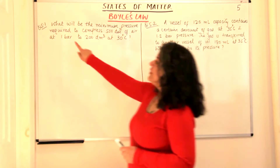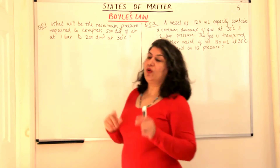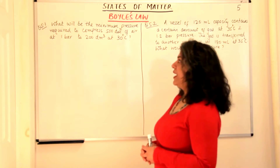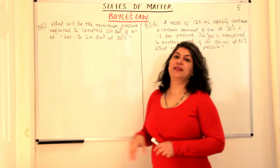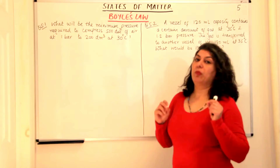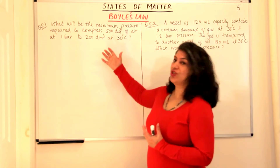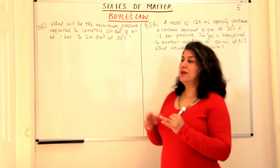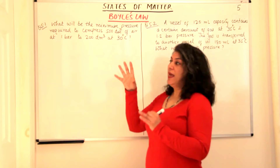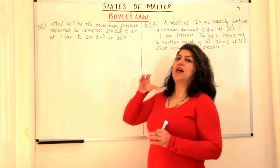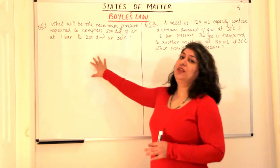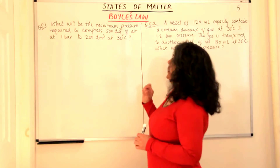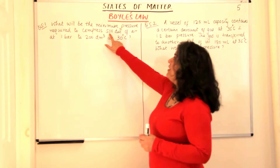The first question is question 1 of the NCRT exercise, chapter 5: What will be the minimum pressure required to compress 500 decimetre cube of air at 1 bar to 200 decimetre cube at 30 degrees Celsius? Whenever you're solving problems based on Boyle's law, first you should know why this question is related to Boyle's law. What is given to you?